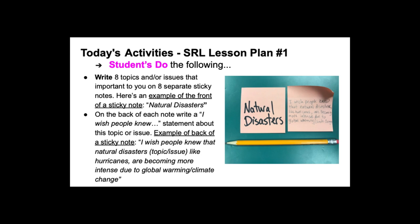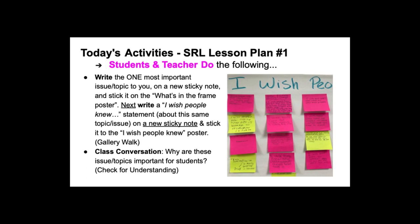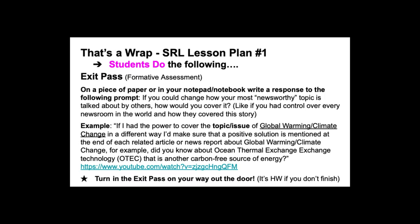We'll create a handout and a class board which represents our three topics and issues that are most important to us. Then we'll try to narrow down what our one most important issue and topic is for each of us. After that, class will be over and you'll have an exit pass activity. Since you're doing this from home, it will be a fun assignment you can do with friends or family.